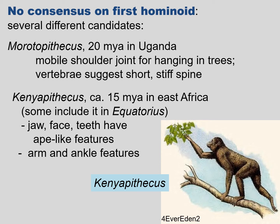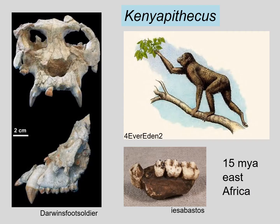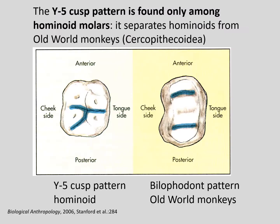And Kenyapithecus, found about 15 million years ago in East Africa. It has an ape-like jaw, face, and teeth, as well as arm and ankle features. If you look at the skull, you'll see it looks very much like an ape — very large canine teeth. And of course also the Y5 cusp pattern on the molars. The Y5 cusp pattern is found only among hominoid molars, so this type of molar separates the apes from the Old World monkeys. Apes have the Y5 cusp pattern on their molars, whereas Old World monkeys have just two cusps that are parallel to each other.